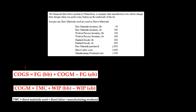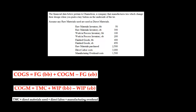To calculate cost of goods sold, we're going to take the finished goods beginning balance plus cost of goods manufactured and then subtract the finished goods ending balance. To do that, we need to know cost of goods manufactured, which is the cost of all goods completed during the period. That's the total manufacturing cost plus the beginning WIP and minus the ending WIP.